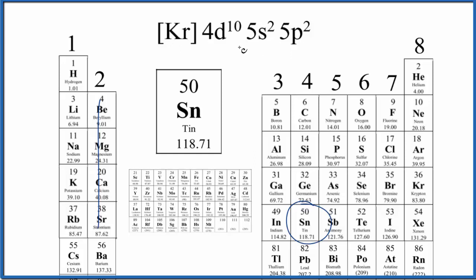For tin, it probably makes sense to count these in the fifth energy level as the valence electrons. There are two plus two, four total valence electrons.